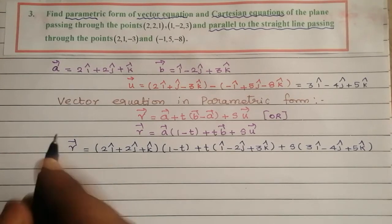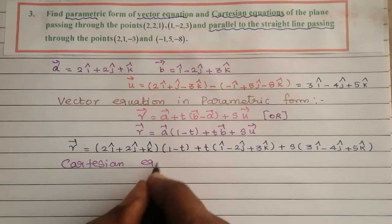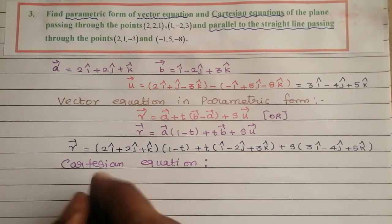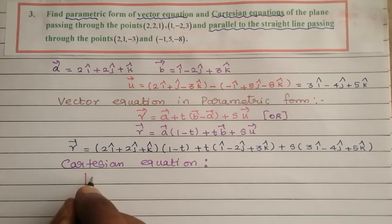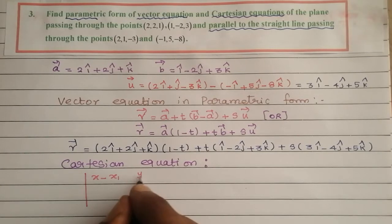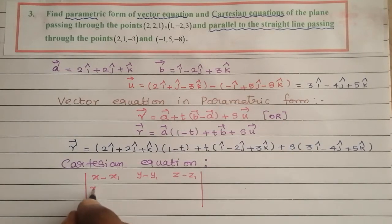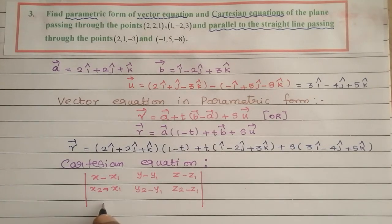Next, I am going to find the Cartesian equation using the determinant method. The general form is a 3x3 determinant with rows (x - x1, y - y1, z - z1), (x2 - x1, y2 - y1, z2 - z1), and (b1, b2, b3) equal to 0.